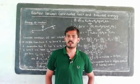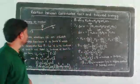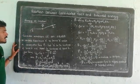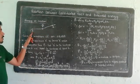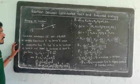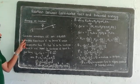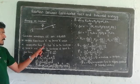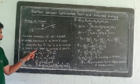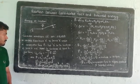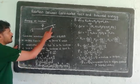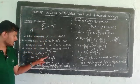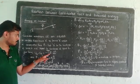Now we extend to three-dimensional motion. This is the three-dimensional motion of an object in three-dimensional space from point A to point B. This is the conservative force F. Let R be the coordinate of point A and R plus delta R be the coordinate of point B. The potential energy difference between points B and A: UB minus UA is equal to minus integral from R to R plus delta R of F dot dr.